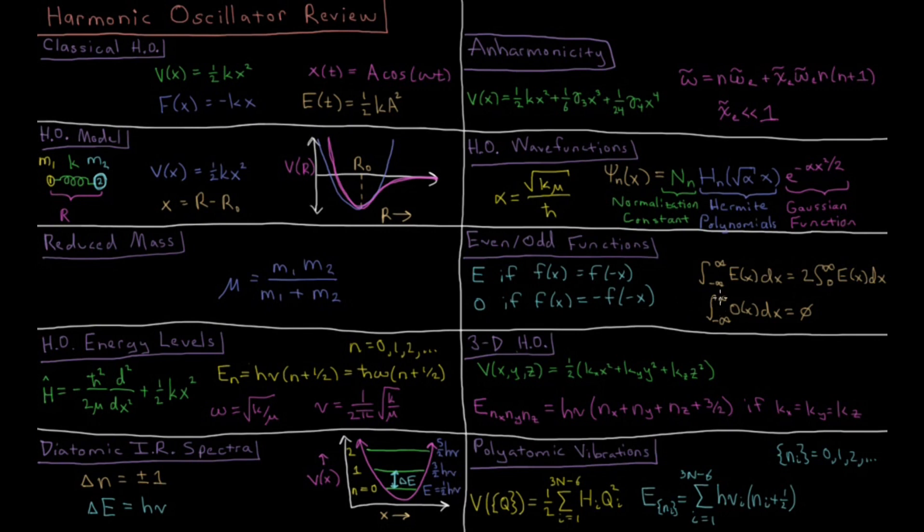Whereas for an odd function, the integral from minus infinity to infinity is going to be zero because the two sides are mirror images of each other. They're opposites and therefore they cancel out perfectly.